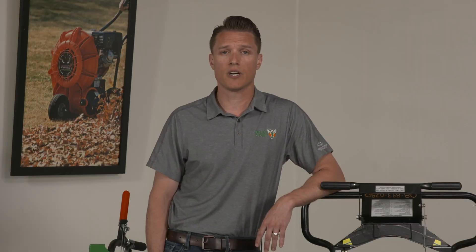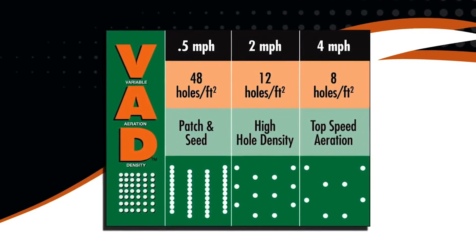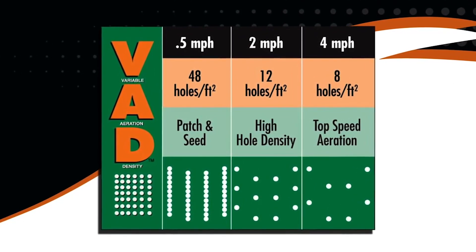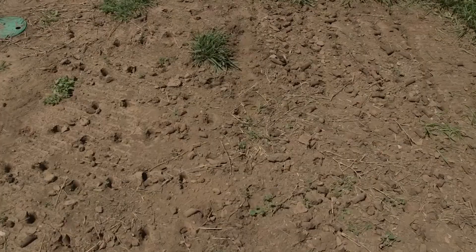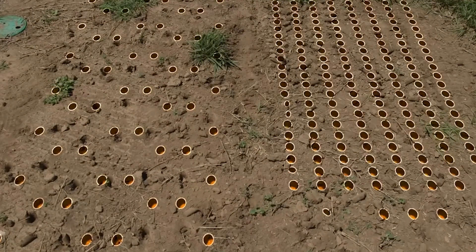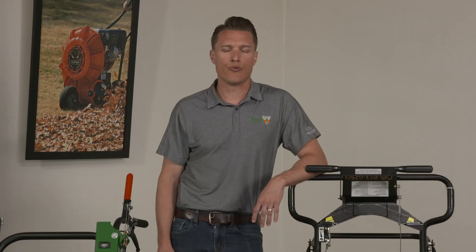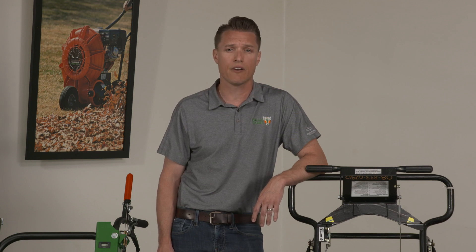One last difference to consider is variable aeration density. This feature allows operators of reciprocating machines to increase the amount of holes per square foot as they slow down the machine. This is an ideal feature when a diseased or dead area requires a high volume of holes so it can be easily and quickly patched and repaired with new seed, plus the seeding can be billed for. Drum or rotating aerators do not have this feature — they have the same number of holes no matter how fast or slow the operator goes. This often causes operators on drums to spend excess time aerating over those patch areas multiple times to prepare them for seed and patch.